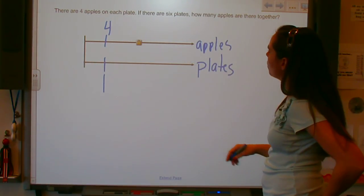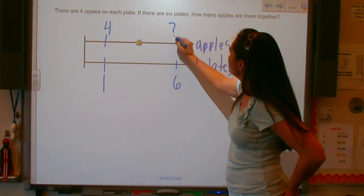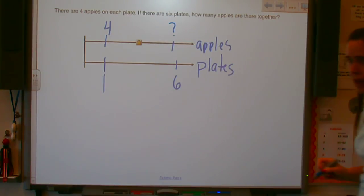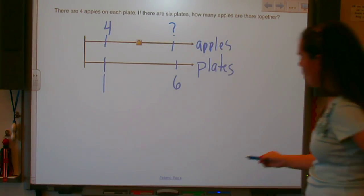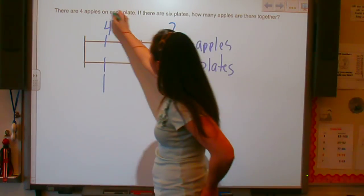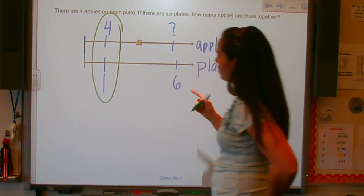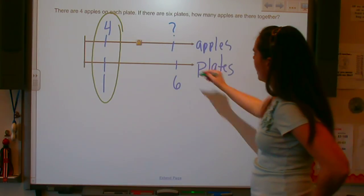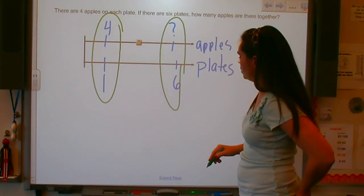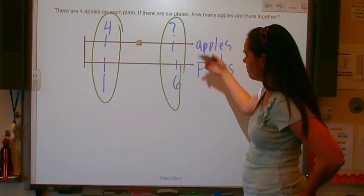Now, I have six plates and I want to know how many apples do I have? So I know this relationship: for every one plate I have four apples. Now I want to know this relationship: how many apples do I have if I have six plates?